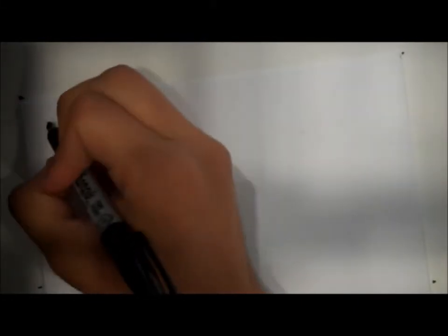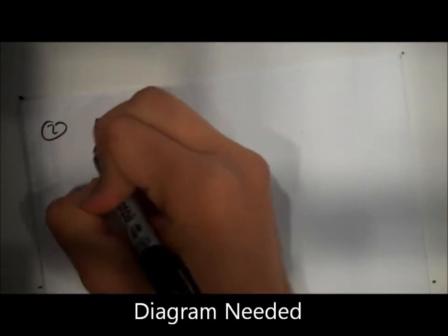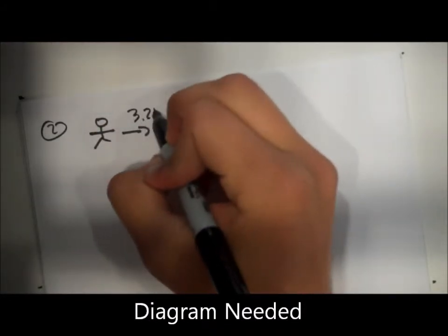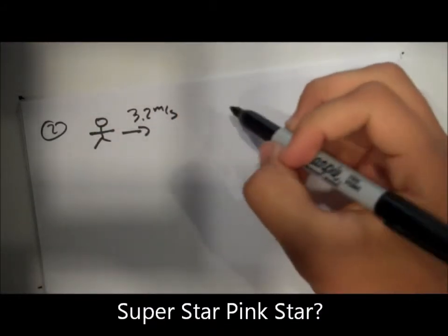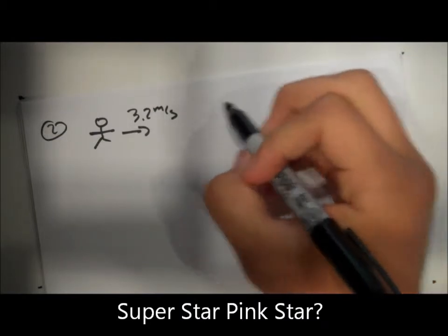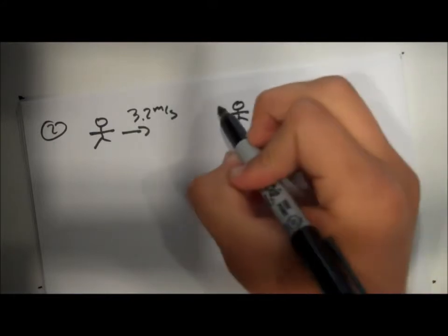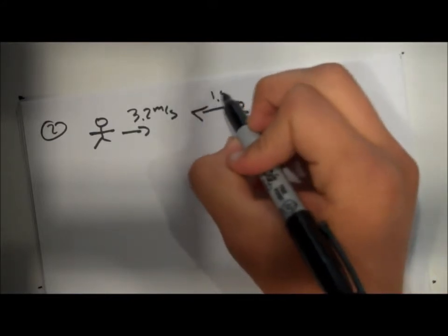What we're going to be starting, as we saw in the diagram, young Austin is going to be running in and getting the super star pink star which will give him invulnerability until he hits something. Since he is invulnerable for now he runs into the puka which is also running towards him very slowly.